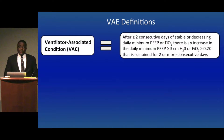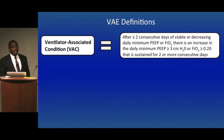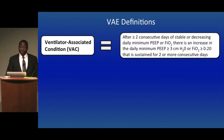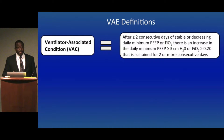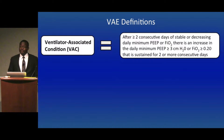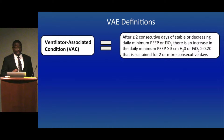The current VAE definition algorithm has three tiers. The first tier is called a ventilator-associated condition, or VAC. A patient is considered to have a VAC if, after two or more consecutive days of a stable or decreasing daily minimum PEEP or FiO2, the patient has an increase in daily minimum PEEP by at least 3 centimeters of water, or an increase in daily minimum FiO2 by 20 percentage points, sustained for at least two days.